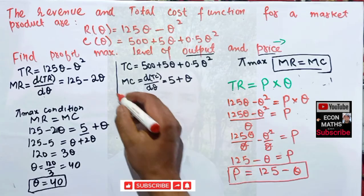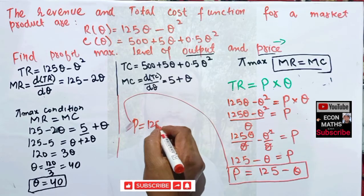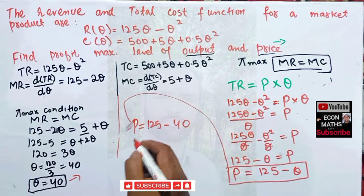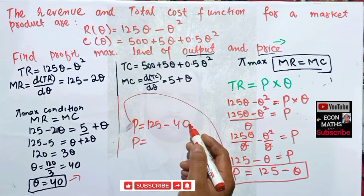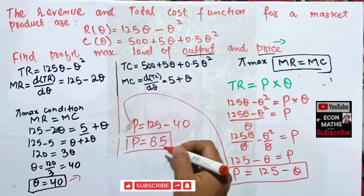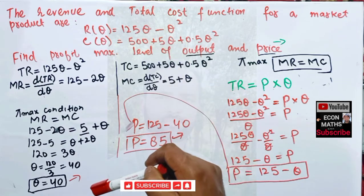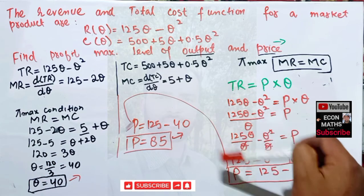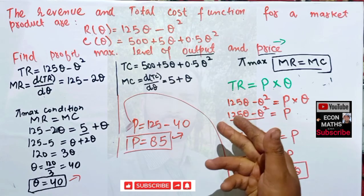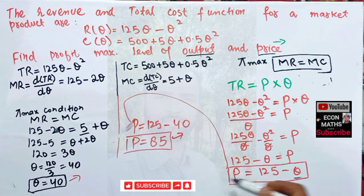Substituting the profit-maximizing output Q = 40 into the inverse demand function: P = 125 minus 40 = 85. So the profit-maximizing level of price is 85 and quantity is 40. Finding output was straightforward using MR = MC; the trickier step was deriving the inverse demand function from the total revenue function to then find the equilibrium price.